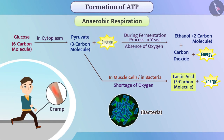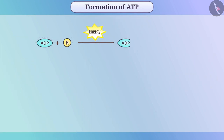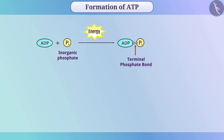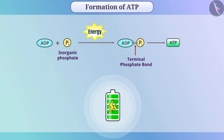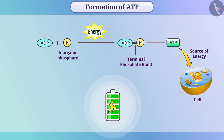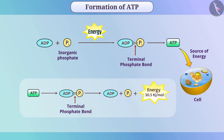The energy produced in the process of respiration is used immediately for the formation of a bond between ADP and inorganic phosphate, which leads to the formation of an ATP molecule — it is like charging a battery. Like a charged battery, the ATP produced is used as a source of energy for reactions in the cell. Whenever there is a requirement of energy, it is obtained by breaking the bonds between the phosphate molecules of ATP.